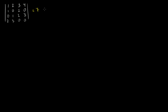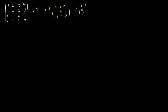We said that the determinant is equal to 1 times the determinant of the submatrix you get by crossing out that row and column, minus 2 times the determinant of the next submatrix — crossing out that row and column to get a 3 by 3.